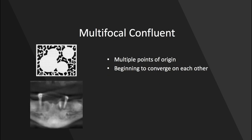The multifocal confluent radiopacity is the same concept as the radiolucent variety, but this time it's radiopaque. We're going to have multiple points of origin, and if they're close to each other they're going to begin to converge on one another — that's where the confluent part comes in.